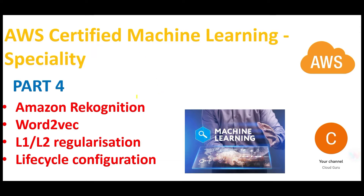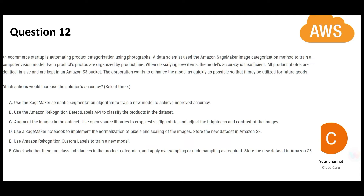In this part, we will look at questions linked with these topics. In the last part, I showed this question as a pre-work, so let us first decode the answer. The client is already using SageMaker, the model's accuracy is insufficient, and the requirement is to enhance the model for future goods. There are photographs and computer vision models used to train it through SageMaker. You want to increase the solution's accuracy, and you have two options: either modify SageMaker itself or use a better option.